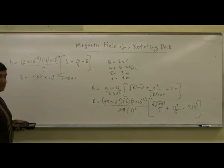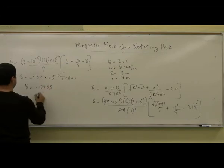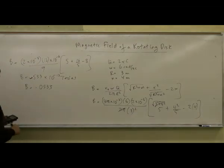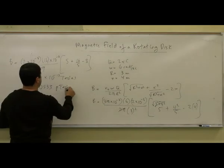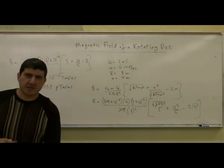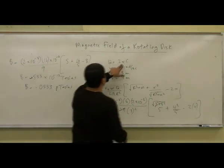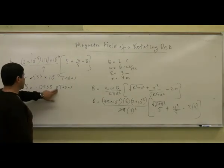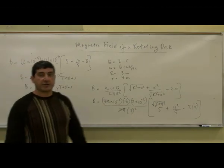So it's pretty weak — 0.0533 picoteslas. Now, if I want to make this a stronger magnetic field, of course I can make it 2 coulombs instead of 2 microcoulombs. And all of a sudden the magnetic field goes up by a factor of 10 to the 6, and now we have 0.0533 microteslas.